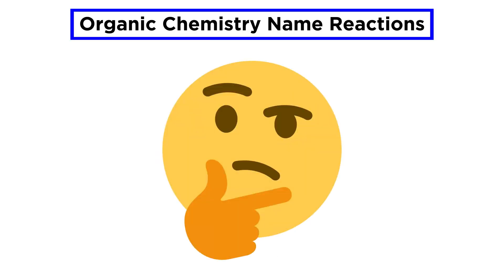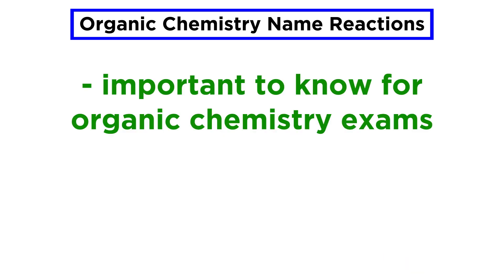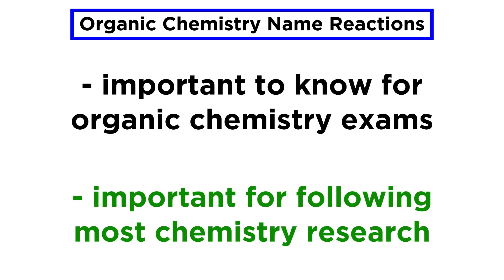In this organic chemistry series, we've learned a handful of name reactions. These are reactions with synthetic utility that are named after their discoverers or developers, and their names act as a shorthand to make them easy to refer to. Apart from the fact that many name reactions will show up on organic chemistry exams, chemists tend to refer to these reactions by name, so it is important to be aware of as many as possible in order to follow chemistry research.